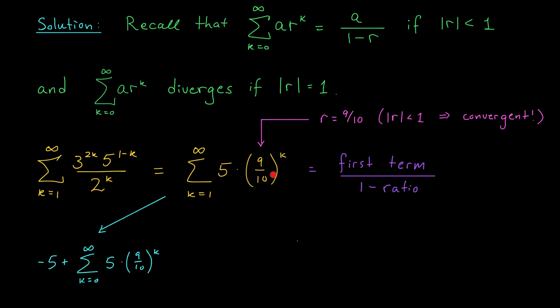Our common ratio here is 9 tenths, and our first term is not 5. It's 5 times 9 tenths to the 1. My sum is therefore given by 5 times 9 tenths. That's what I get by setting k equals 1, divided by 1 minus 9 tenths.